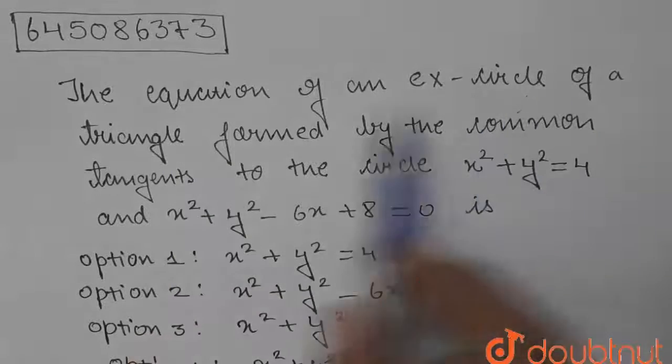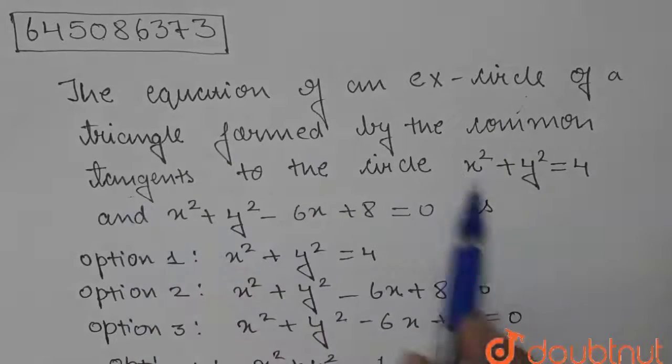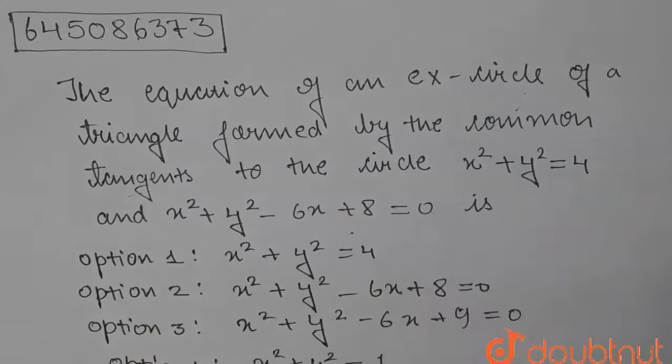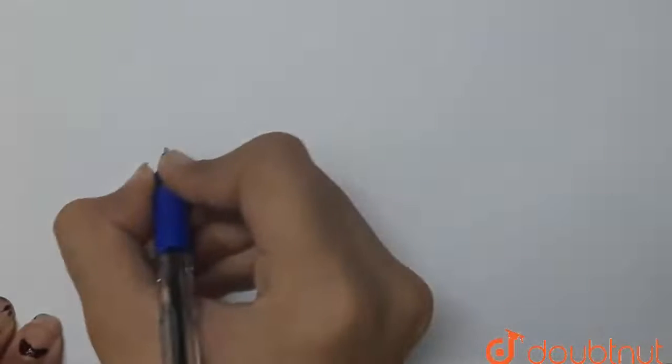Hello students, today's question is the equation of ex-circle of a triangle formed by the common tangent to the circles x² + y² = 4 and x² + y² - 6x + 8 = 0. We need to find the equation of the ex-circle. Now let's understand by diagram.